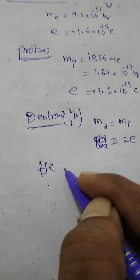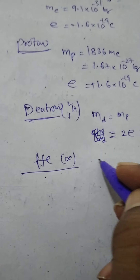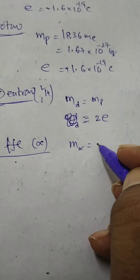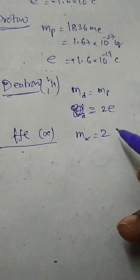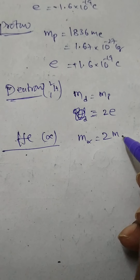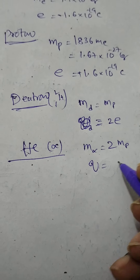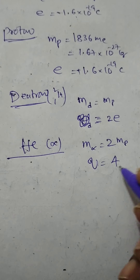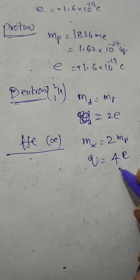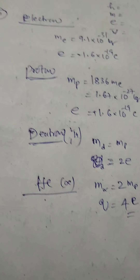Helium nucleus or alpha particle: its mass is equal to 2 times the mass of proton, and charge is equal to 4 times the charge on electron, that is 4e. Remember these points.